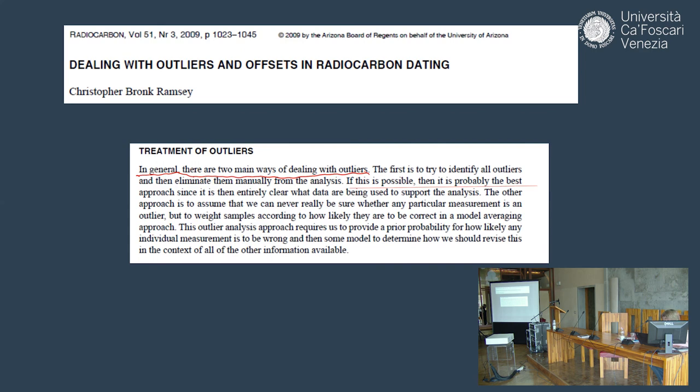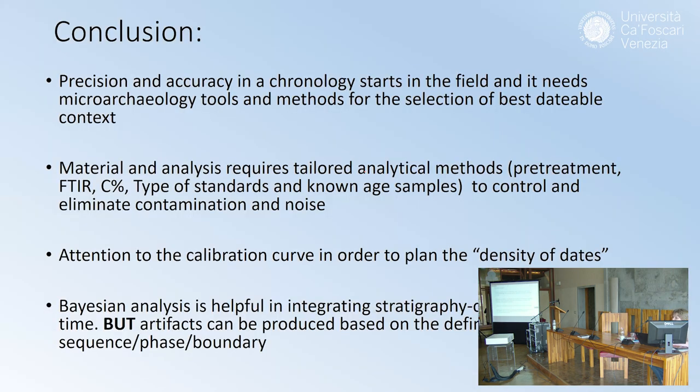In conclusion, I think precision, accuracy, and the chronology start in the field. It needs microarchaeology tools and methods for the selection of the best dateable context. If you don't get the right context, then nothing. The accelerator can be the best in the world, but if the context is wrong, we can't save it. Material and analysis requires tailored analytical methods, pretreatment, FTIR, C percentage, types of standards and known in each samples, according to the type of chronology we are investigating. This is to control and eliminate contamination on one side, which is somehow independent from us, and the noise that can source from this.